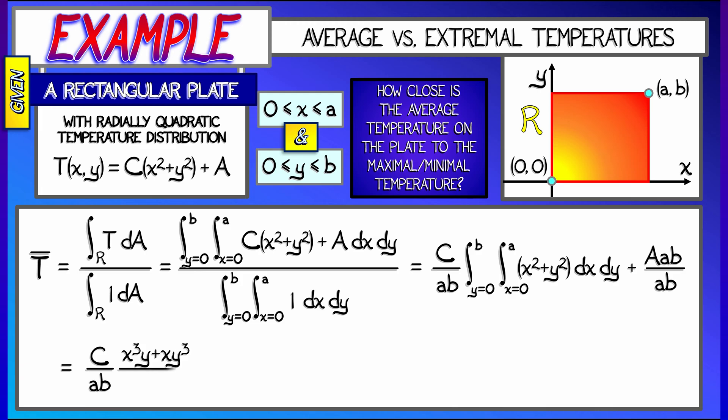And then the first integral, integrating x squared plus y squared, that's not so bad. I get C over AB times quantity x cubed y plus x y cubed, all that over 3. Evaluate from 0 to A and 0 to B for x and y. Add the ambient temperature. Do a little bit of algebraic simplification, a little bit of factoring, cancellation. And in the end, what we get is C over 3 times quantity a squared plus b squared plus A.